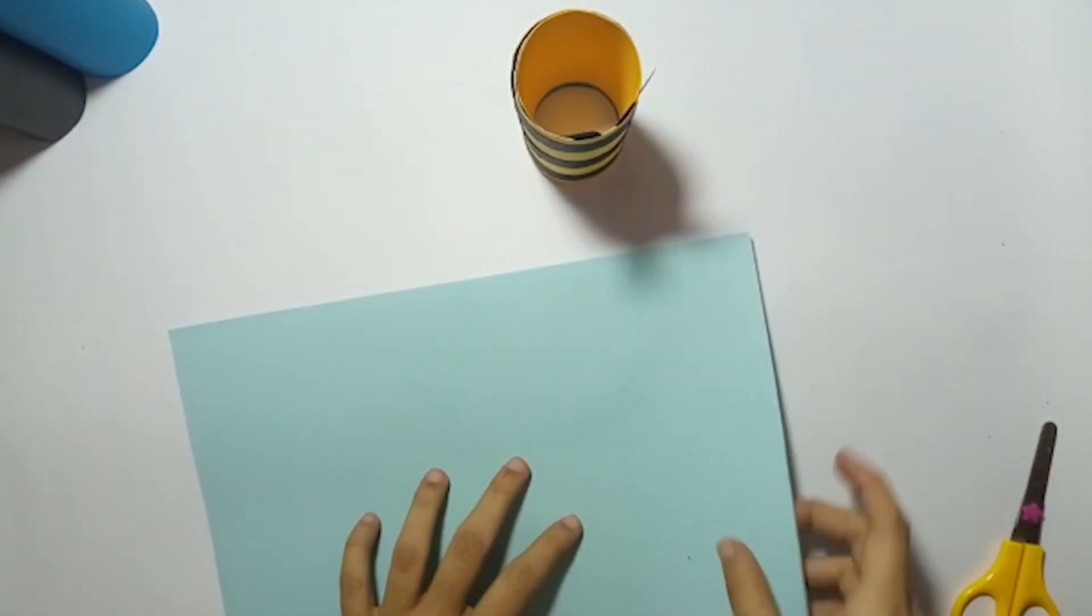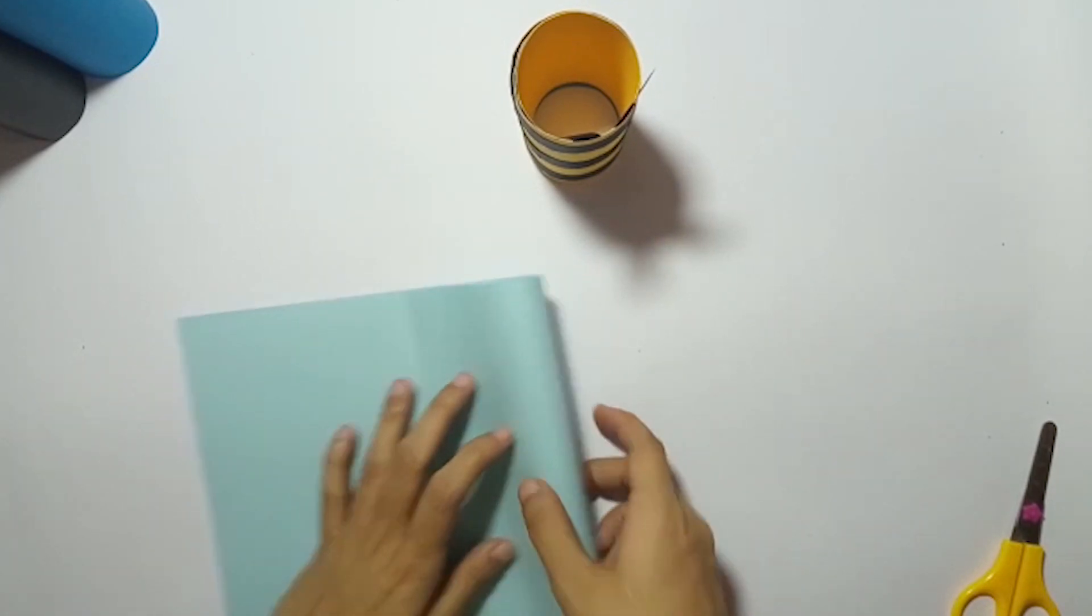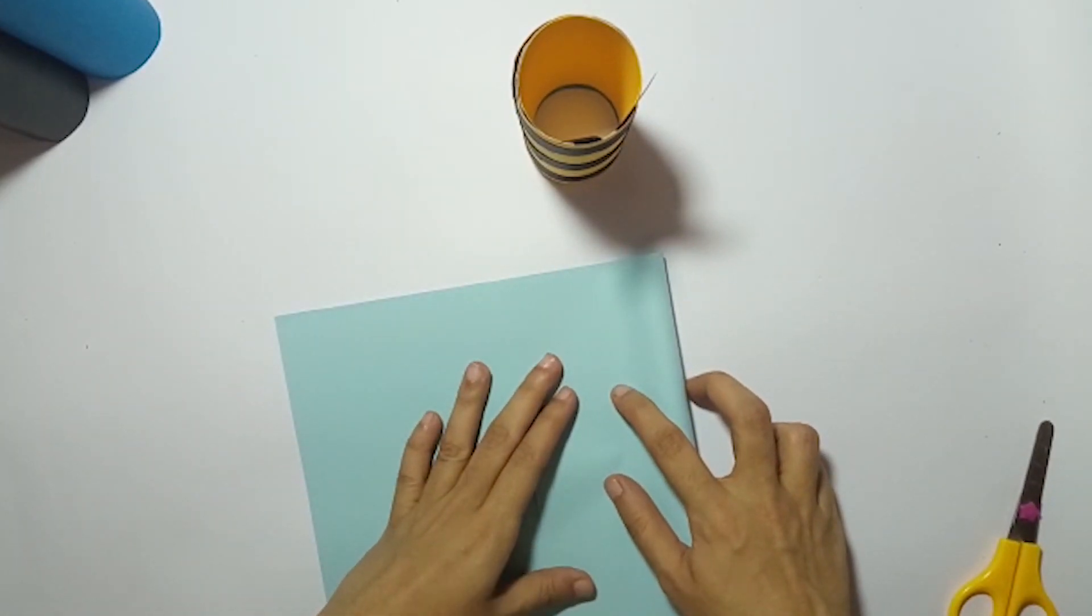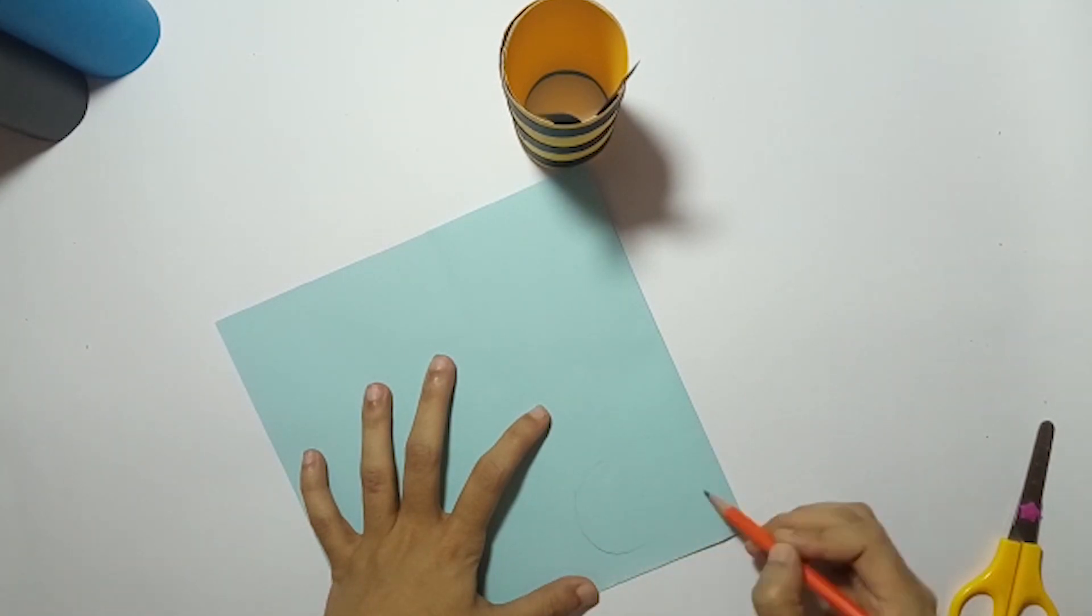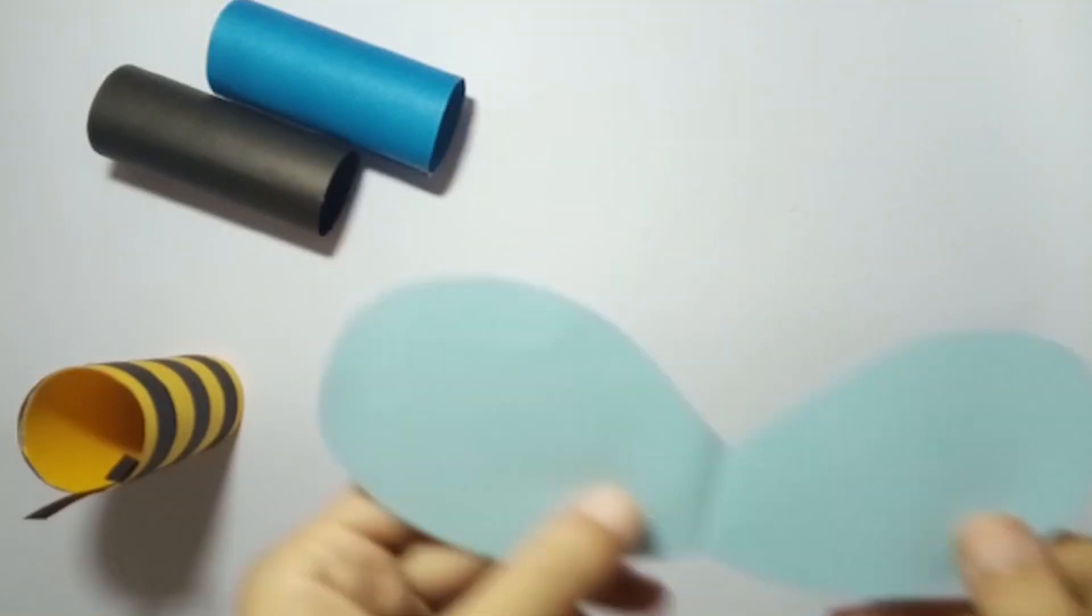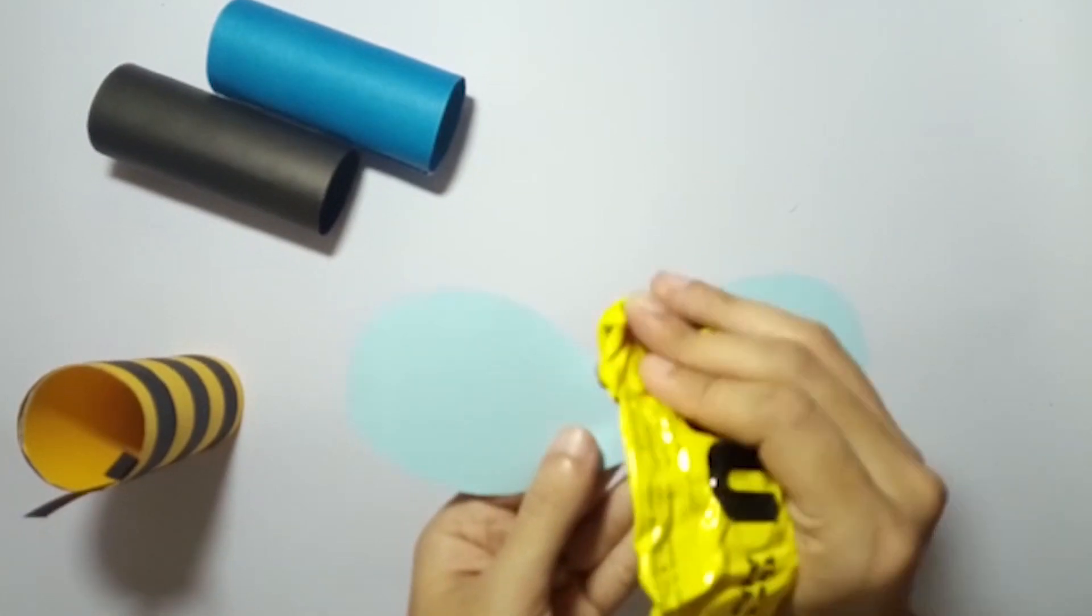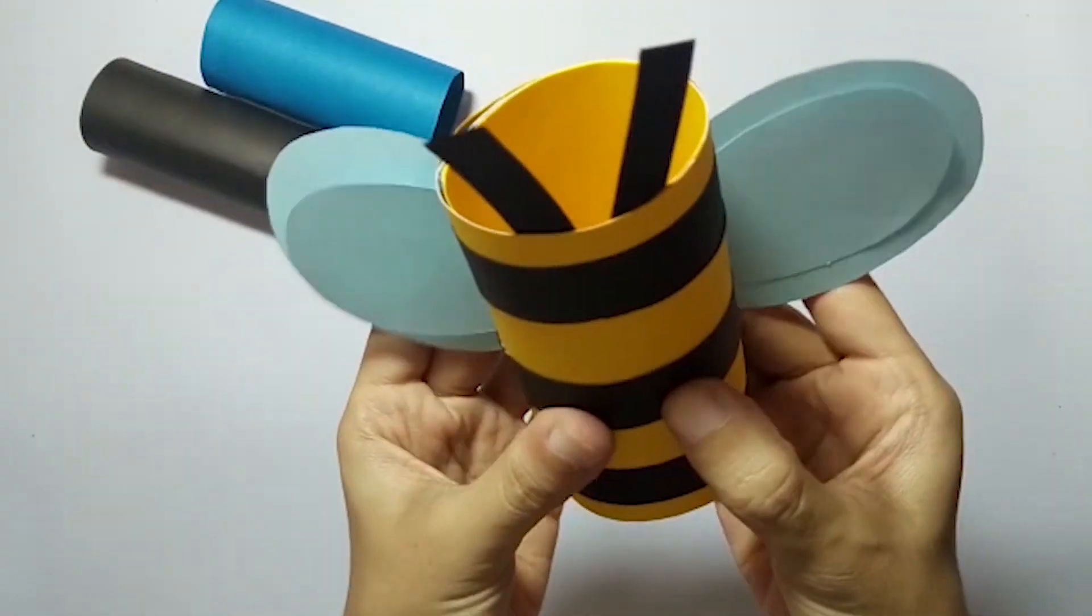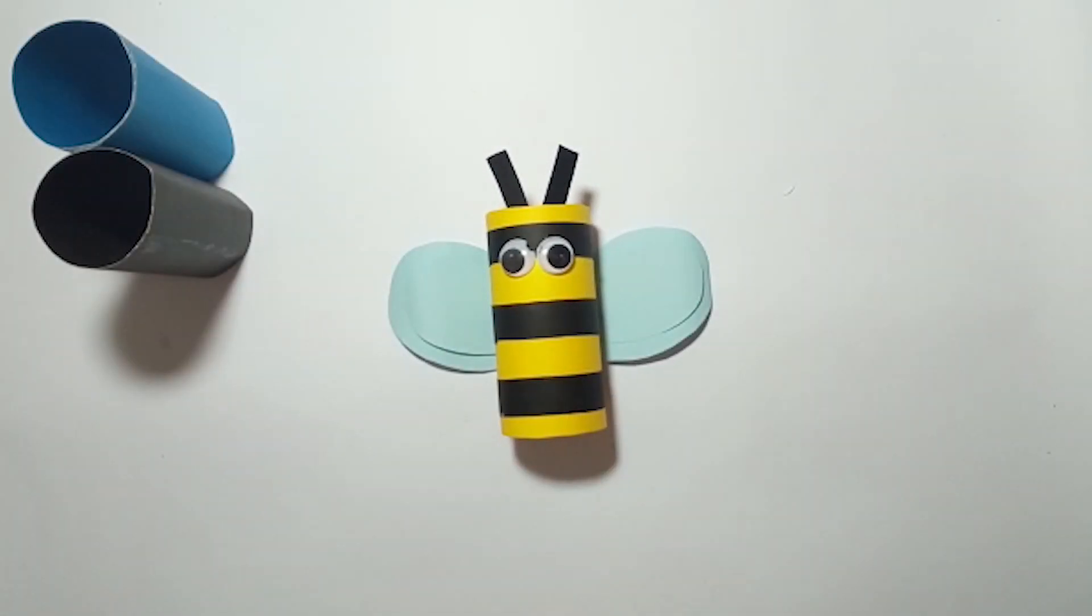Cut its wings and paste it on the opposite side of the antenna. Wow, it's looking like a honeybee!